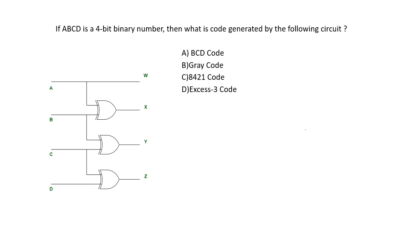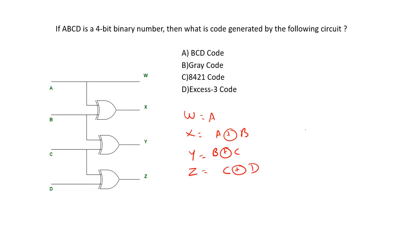The output for the binary to Gray code converter would be: W equal to A, X is A XOR B, Y is B XOR C, and Z is C XOR D. So this is an example of a binary to Gray code converter, and the correct option is B.